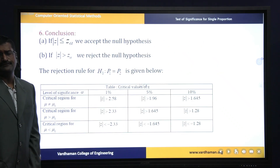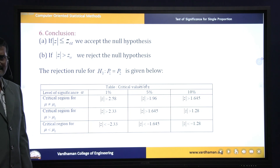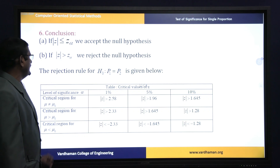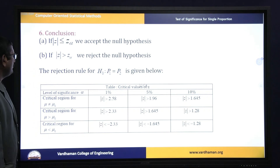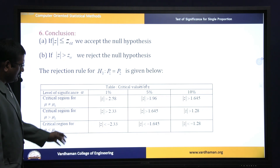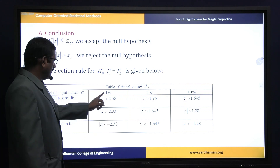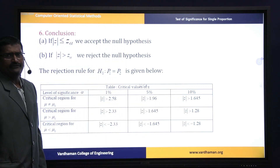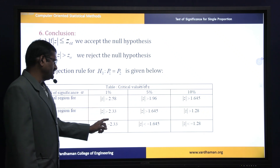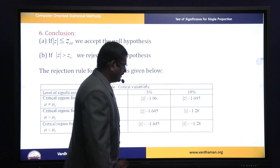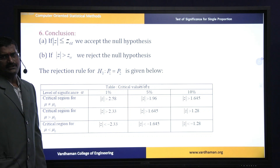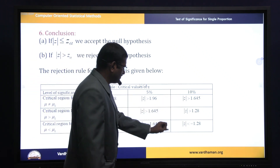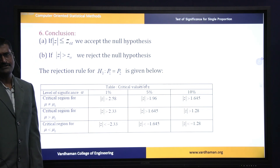For the conclusion: if Z calculated ≤ Z table value, we accept the null hypothesis; otherwise we reject it. Based on the rejection rule — for a two-tailed test: 1% level: 2.58, 5% level: 1.96, 10% level: 1.645. For a right-tailed test: 1%: 2.33, 5%: 1.645, 10%: 1.28. For a left-tailed test: 1%: 2.33, 5%: −1.645, 10%: −1.28.